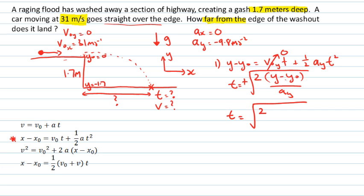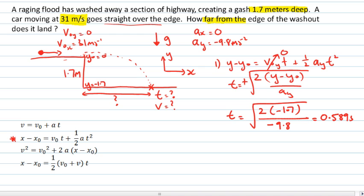So minus 1.7 subtracting off 0 is still negative 1.7. Now that may look a little bit worrisome that I've got a minus sign in a square root. However, if we put the correct acceleration in, realizing that the acceleration in the y direction here is minus 9.8, then those two minus signs will cancel and it will be mathematically fine. Popping that into my calculator, I find the time is equal to 0.589 seconds.